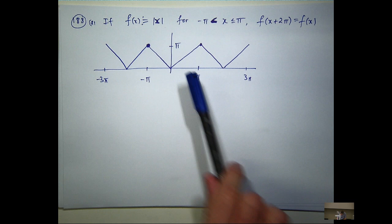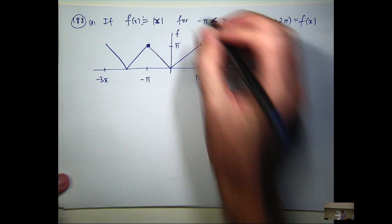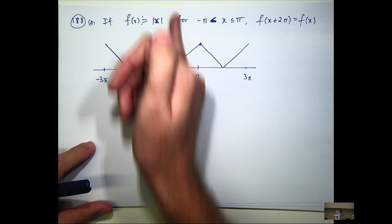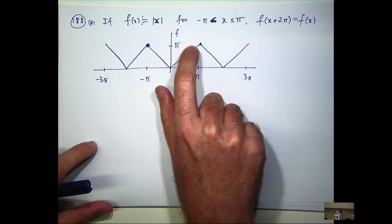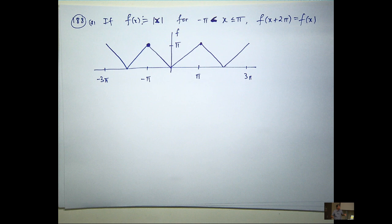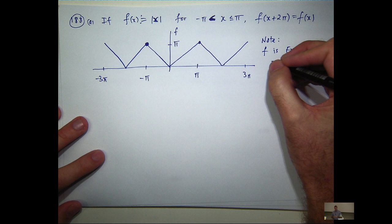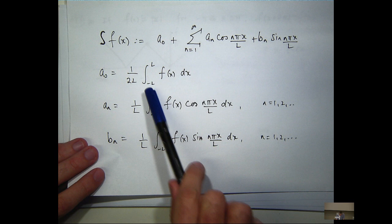From our graph of f, is there any symmetry? Is the function odd or even or neither? It's even, because an even function has a reflection in the vertical axis. If I move x units to the right from the origin and x units to the left, you should get the same value of the function at those two points. So f is even.